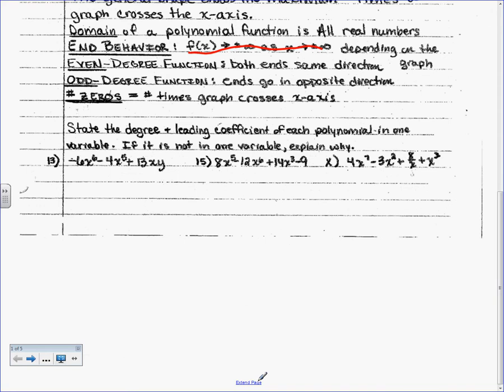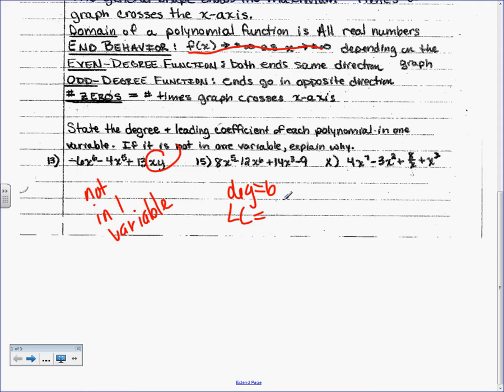State the degree and leading coefficient of each polynomial in one variable — if it's not in one variable, explain why. Number 13: is it one variable? No, because of that — that's two variables. So: not in one variable. Number 15: is it in one variable? Yes. What is the degree of this function? Six. Therefore, what's the leading coefficient, even though it may not be in the front? Negative 12. If we were proper and wrote this in descending order, the negative 12 would be in the front.